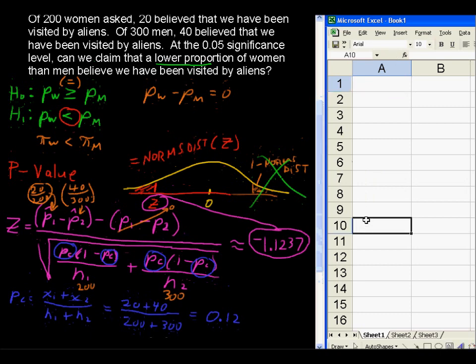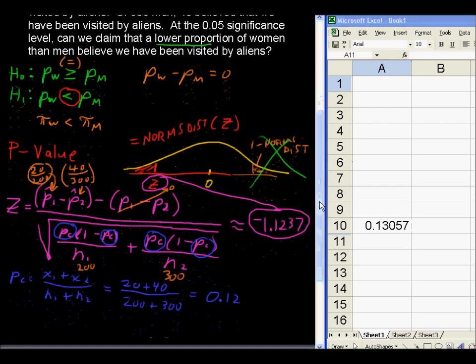So I'm going to type that in right here. Equals NORM.S.DIST of this z-score, so negative 1.1237. I've rounded there. Of course that decimal goes on longer. And we get 0.13057. What does that mean for us? The p-value, let's put it down here.